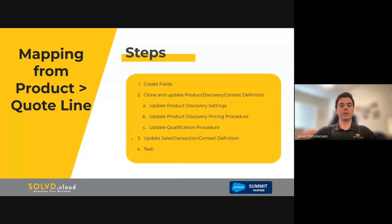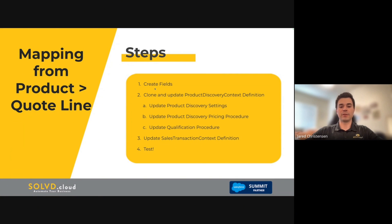Here's what we're going to cover today. First, create the fields - make a field on the product object and then a field on the quote line object. Once that's done, we'll hop into the product discovery context definition, clone it, make some updates, update everywhere that references that context definition, and then make some updates to the sales transaction context definition. Lastly, we'll test to make sure it's working.